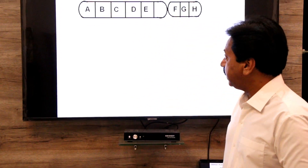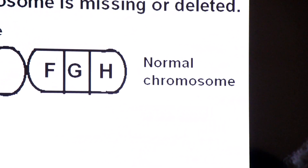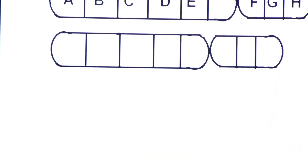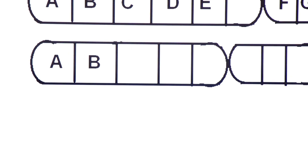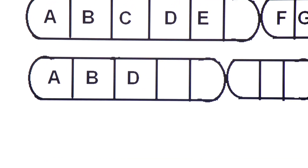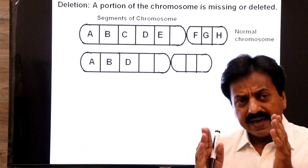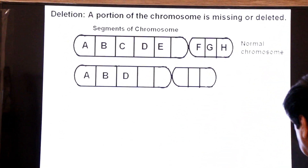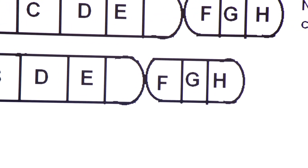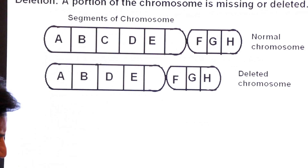In deletion, segment A remains the same, segment B remains the same, but segment C is deleted. When one segment is deleted, not one but many genes are deleted. The remaining segments are E, F, G, and H. This resulting chromosome is called the deleted chromosome.